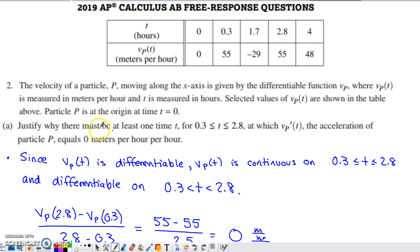Part A asks us to justify why there must be at least one time in the interval 0.3 to 2.8 at which V prime of T, which represents the acceleration of the particle, equals zero meters per hour per hour. I read that and right away I thought mean value theorem. What triggered that is we have values of velocity and we're trying to guarantee the existence of a value of velocity's derivative. That's exactly what the conclusion of the mean value theorem says. To use one of these theorems, you have to give yourself the green light in order to proceed with it.